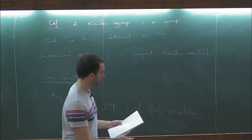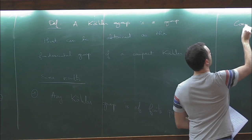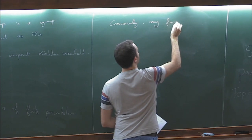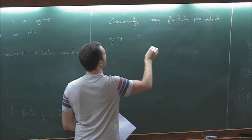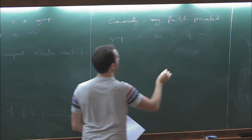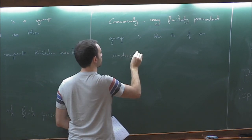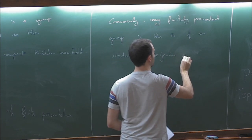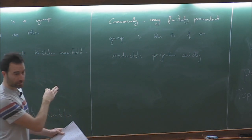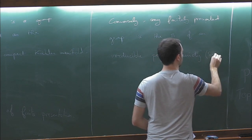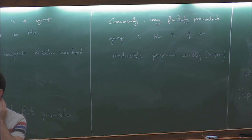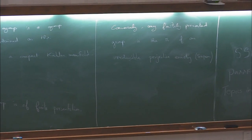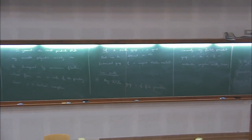Conversely, one can ask: is any finitely presented group a Kähler group? This is false, but there are intermediate results. Any finitely presented group is the fundamental group of an irreducible complex projective variety — this is a result of Simpson, the difficulty being to get an irreducible variety. It is not smooth, since any smooth projective variety is a compact Kähler manifold. Another result in this direction, due to Gompf, is that any finitely presented group is also the fundamental group of a compact real symplectic complex threefold.